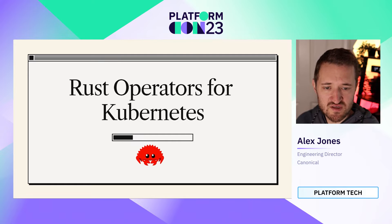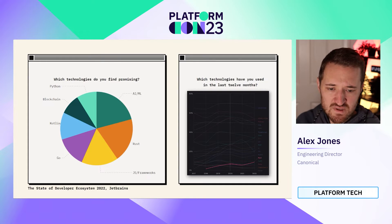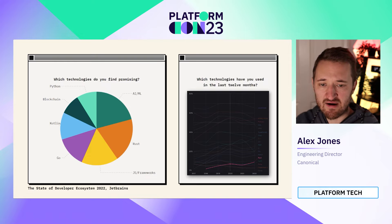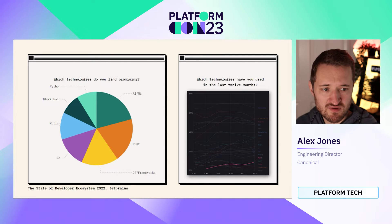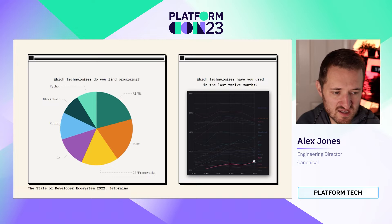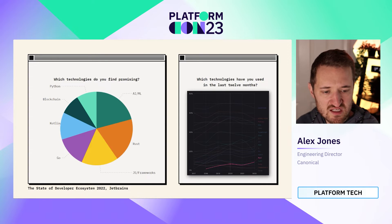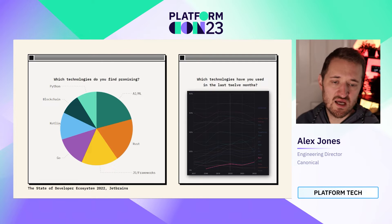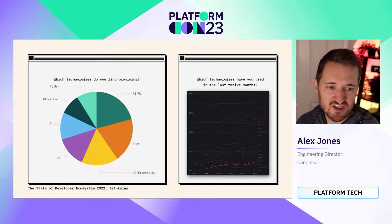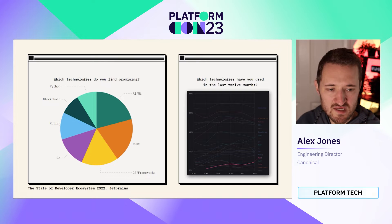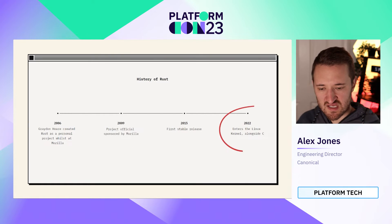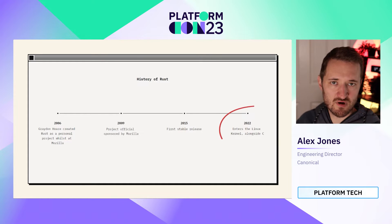Let's talk about Rust operators in the Kubernetes context specifically. This is a set of data pulled from the State of Developer Ecosystem report by JetBrains. AI/ML came in at 13%, Rust at 11% of technologies that are the most promising from developers this year. The graph on the right shows approximately 10% of developers have touched Rust in the past 12 months, which is a trending upwards vector. Generally speaking, Rust has increased year on year in adoption, and we're seeing it used in many companies ever since its stable release in 2015.